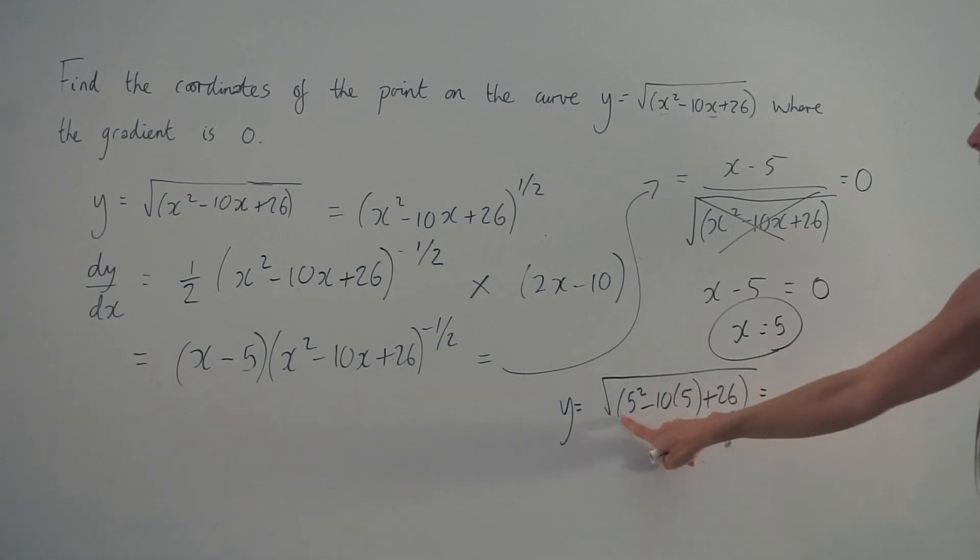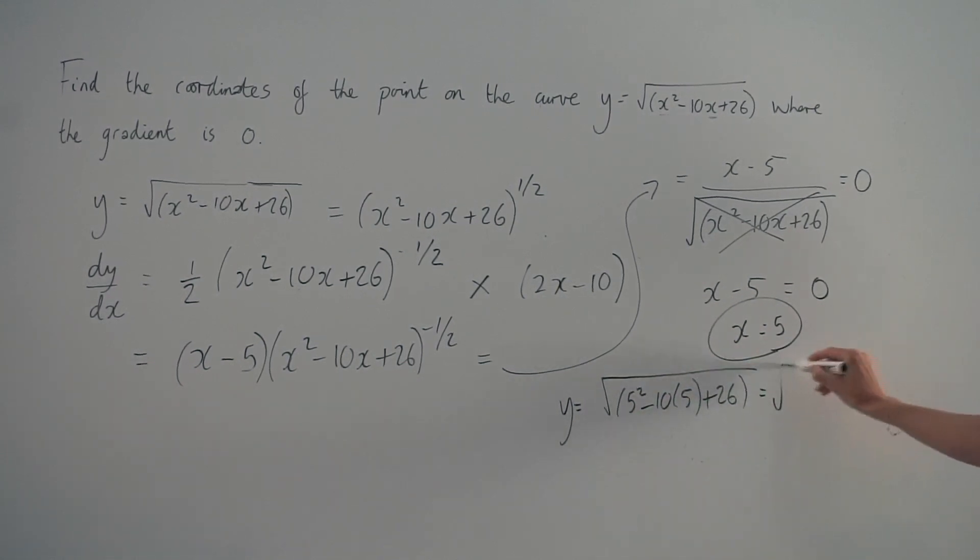So 5 squared is 25. Negative 10 multiplied by 5 is negative 50. And plus 26.